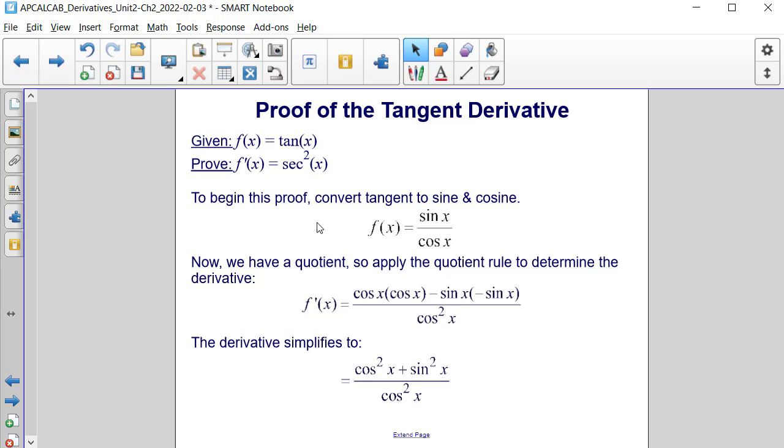To begin this proof, convert tangent into sine and cosine. So f of x is equal to sine of x divided by cosine of x.